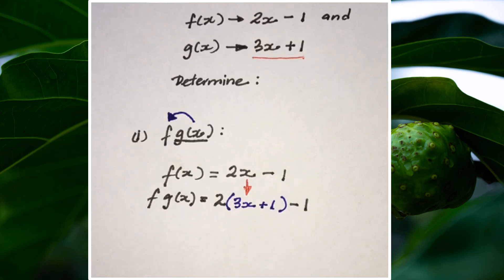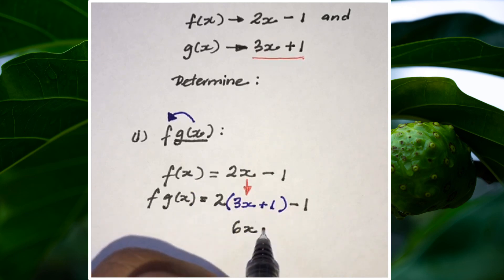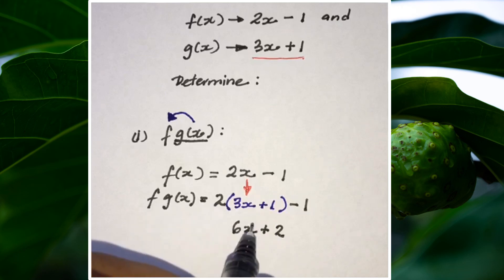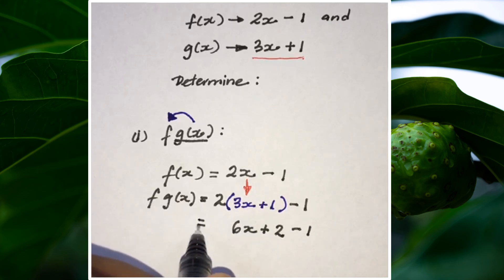So all we have to do now is expand the brackets. We'll have 2 times 3x, which gives us 6x, and 2 times this positive 1, which gives us positive 2. Remember, we have this minus 1 on the outside, so I have to put it back. Now I can group the like terms.